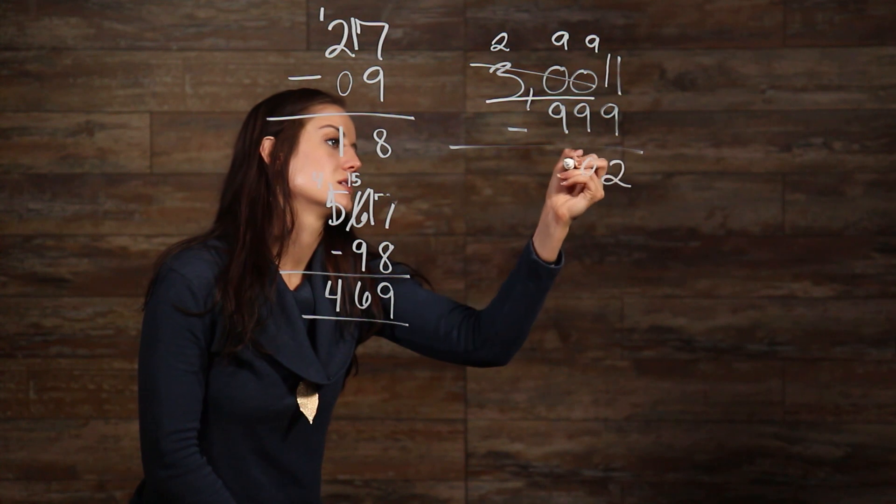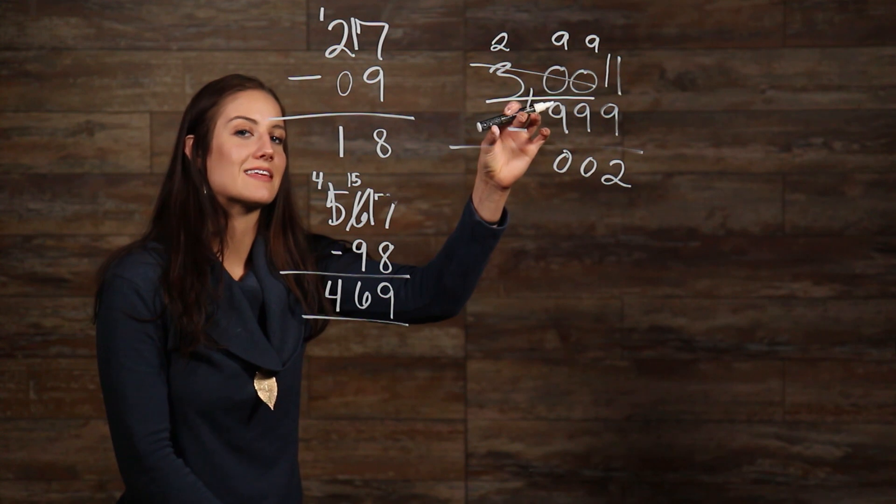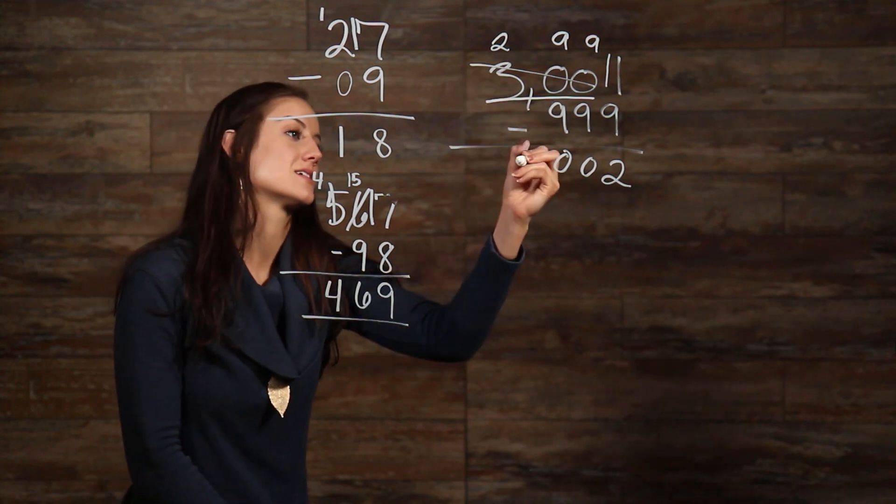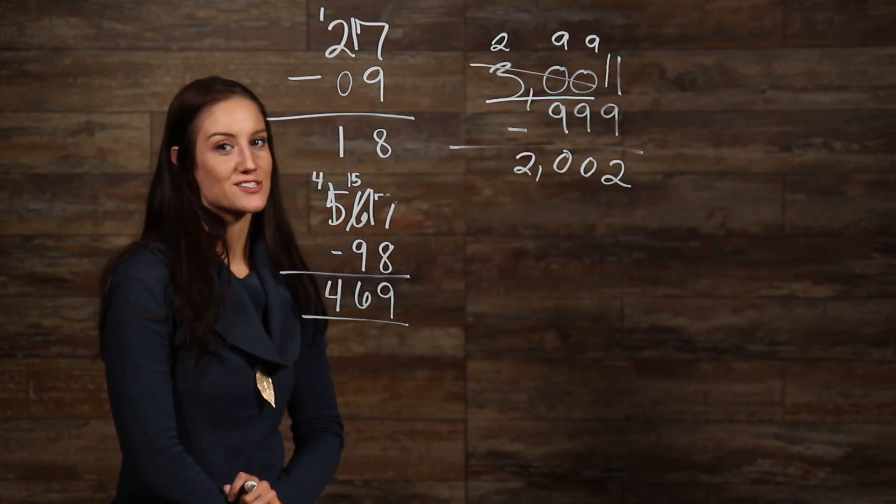So, now we're left with 2 in the thousands place, but we aren't taking anything away from it. So, we can just bring that down, giving us 2,002 as our answer.